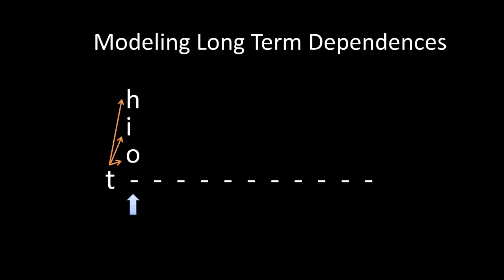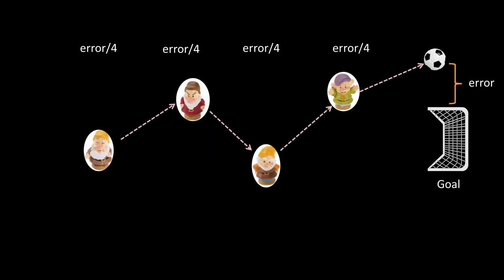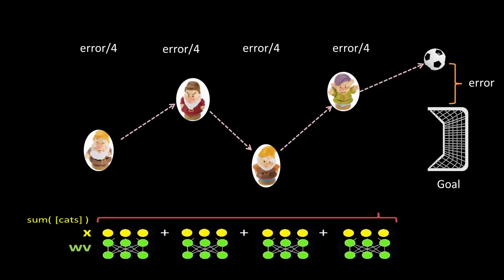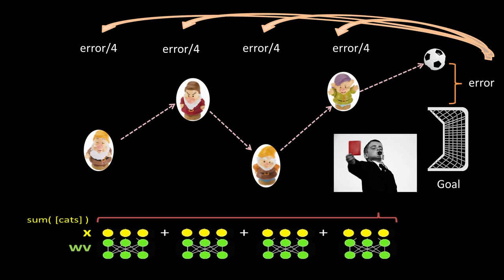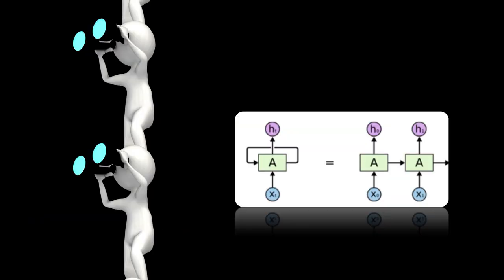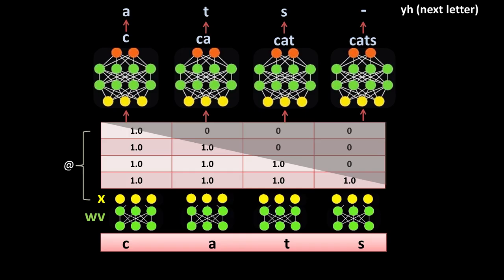We still can't model long-term dependencies. It's easy to model what comes right after 't' but very difficult to model what comes after 10 steps because it depends on the context. Learning to form a proper context from the inputs is a challenging task. Since we are summing the inputs directly, backpropagation will share the error equally over all inputs, but that's not good for learning — inputs need to be penalized appropriately.